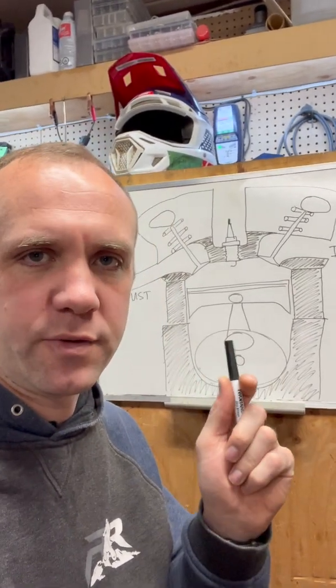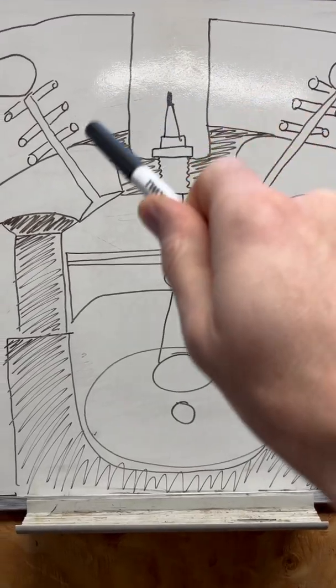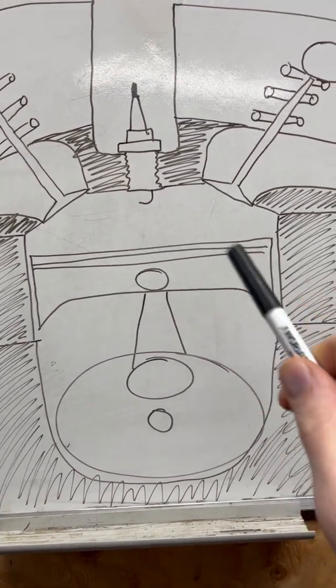Yesterday I talked about how a two-stroke works. Now here's the four-stroke. In a two-stroke there's a lot of things happening all at once. With a four-stroke it's a lot more compartmentalized.